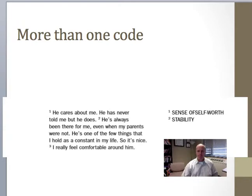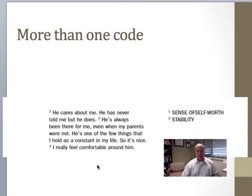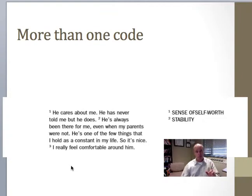My point here on this example is that you can use more than one code for the same bit of text. The way this was done, the first code is for that first sentence, the second code is for the next bit, and so on. But there could actually be two codes for the same short bit of text — that's not impossible. So when you're coding text, you're going to come up with short words that attach to certain bits of text — that's the main idea.